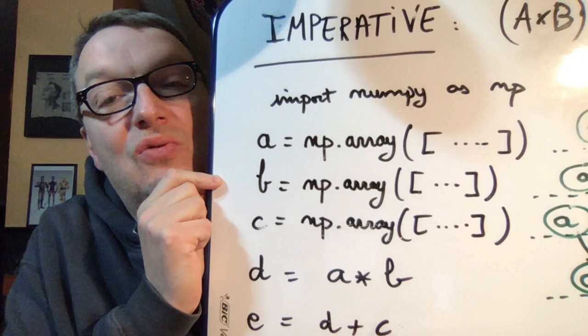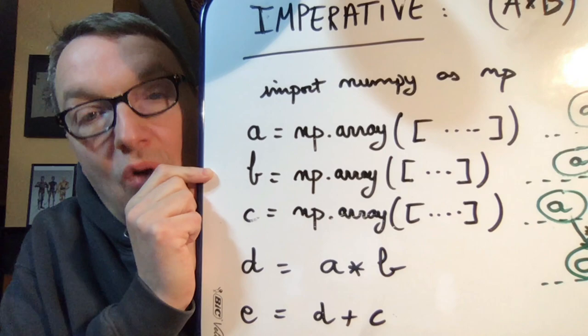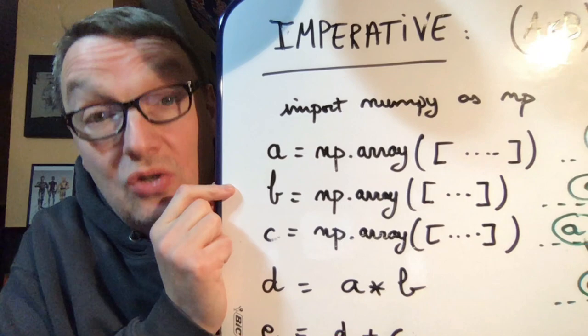So here I'm using NumPy as an example, but it could be Java, it could be C++. Again, imperative mode is what you already know. So if we're using NumPy, we would create three variables A, B, C—three NumPy arrays with actual data, so data would be provided right there.